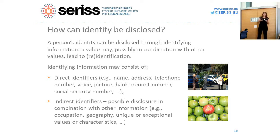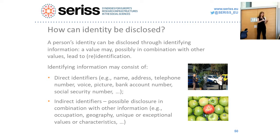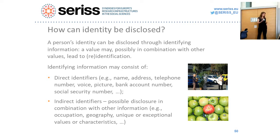A person's identity can be disclosed through identifying information — either a single piece of information or a combination of different values. We distinguish between direct identifiers and indirect identifiers. Direct identifiers are things like a name, address, or phone number — something that directly leads you to the person. Indirect identifiers are trickier: it's often a combination of different elements that together lead to identification.